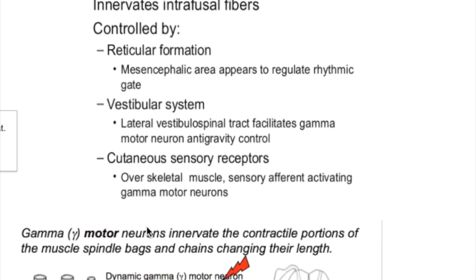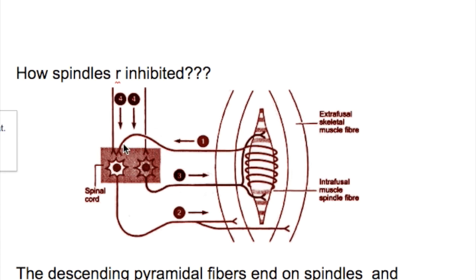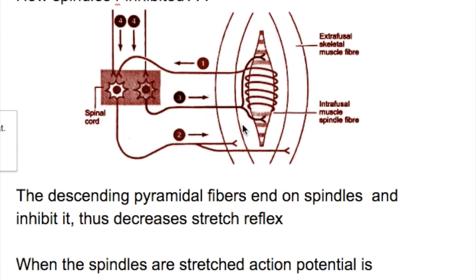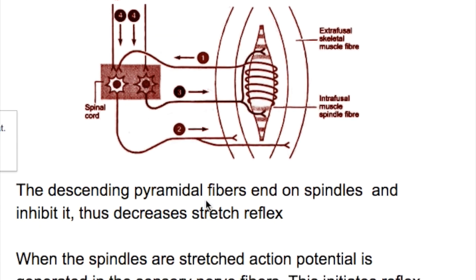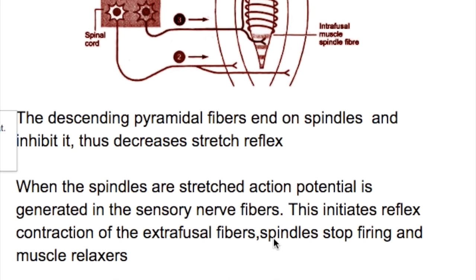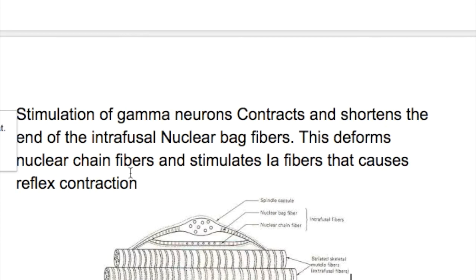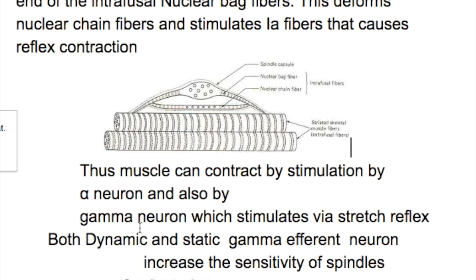Spindles are inhibited when descending fibers from the pyramidal tract end on the spindles and inhibit them, thus decreasing the stretch reflex. When spindles are stretched, an action potential is generated in the sensory nerve, which initiates reflex contraction of the extrafusal fiber; the spindle then stops firing and the muscle stops contracting. Stimulation of the gamma neuron contracts and shortens the ends of the intrafusal nuclear bag fiber, which deforms the nuclear chain fibers and stimulates the 1a fiber, causing reflex contraction. Thus muscle can be contracted by stimulation of both alpha and gamma neurons.